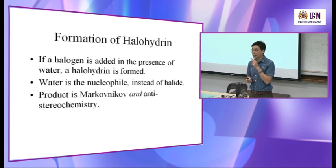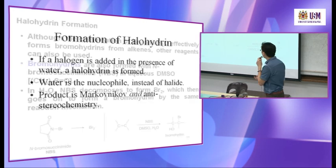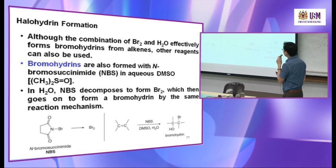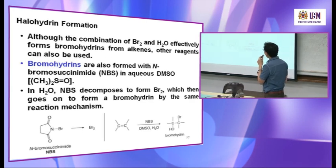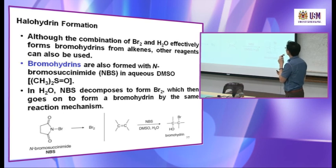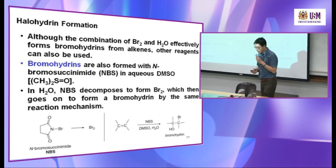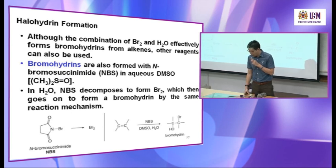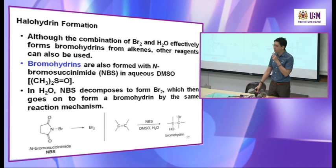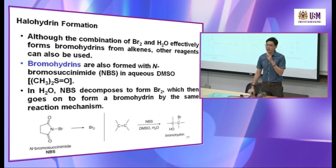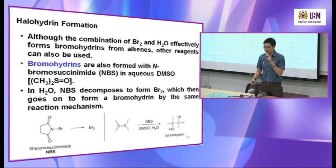The product shows anti addition — one group up, one down. In halohydrin formation, the combination of Br2 and H2O effectively forms bromohydrin from an alkene. Normally bromine is used in water as the halogen reagent.